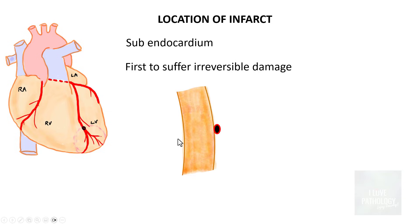So if there is an obstruction, if this is the endocardium, that's myocardium, and that is epicardium, so the first to suffer irreversible damage is the subendocardium.